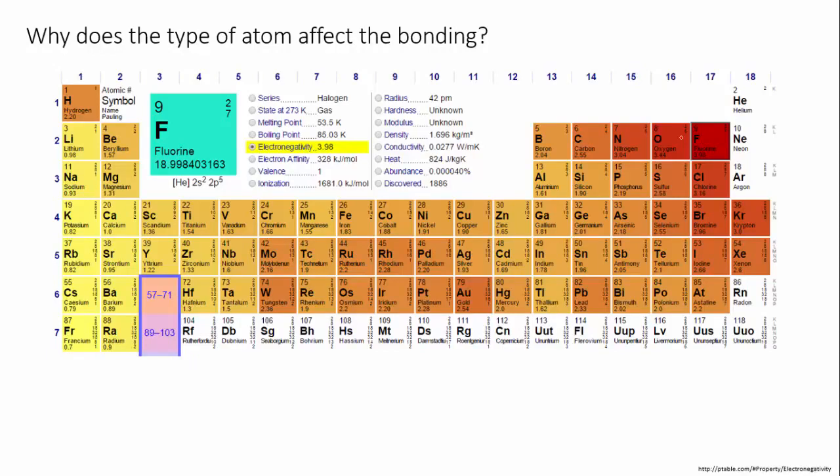Recall that on the periodic table, electronegativity is highest in the non-metals, with fluorine having the highest electronegativity of all, and lowest in the metals.